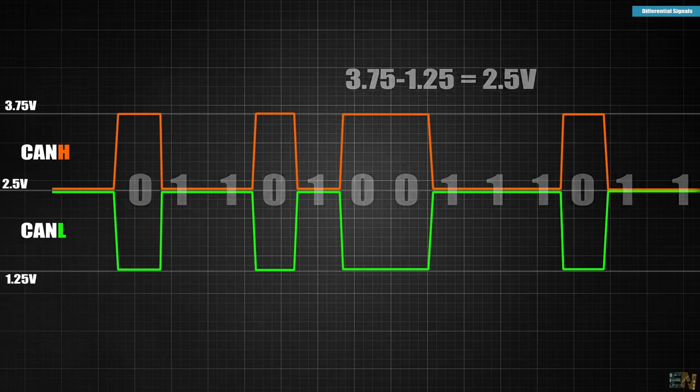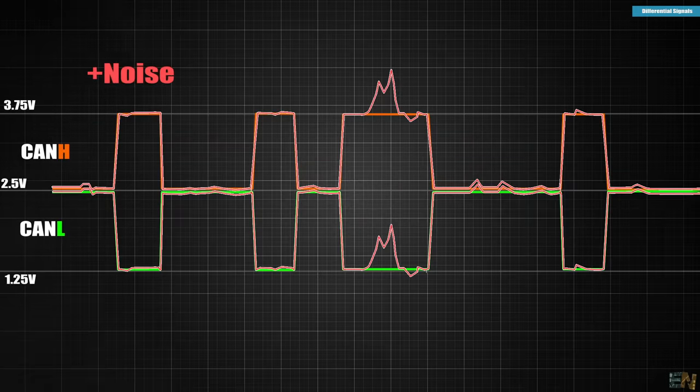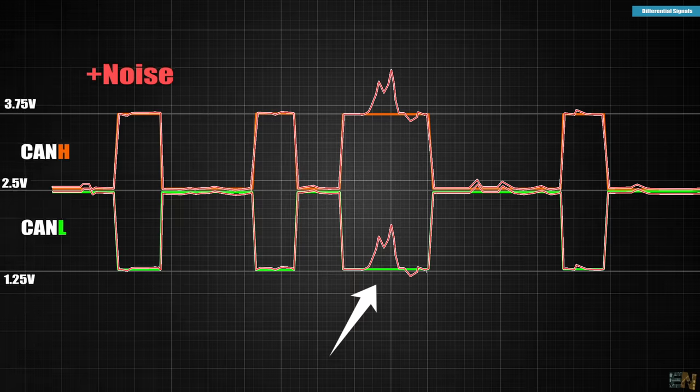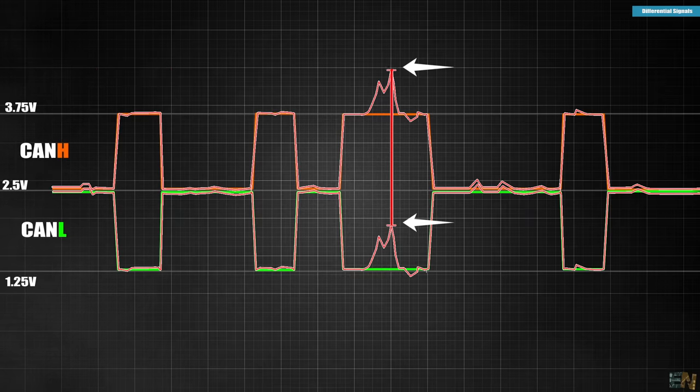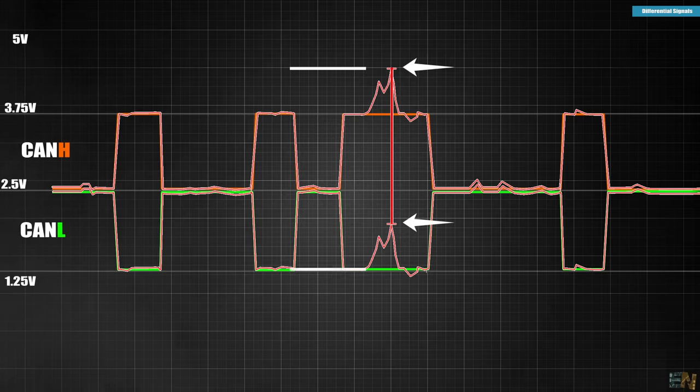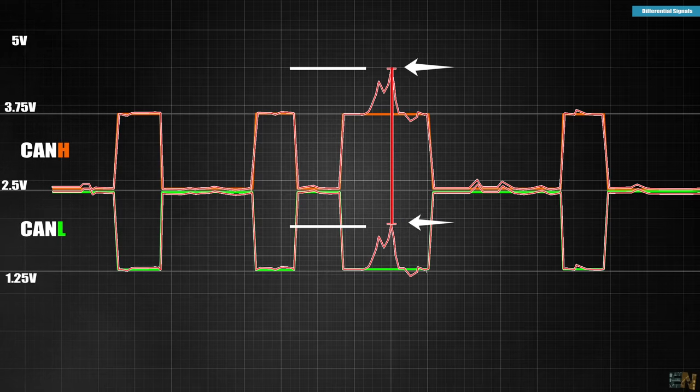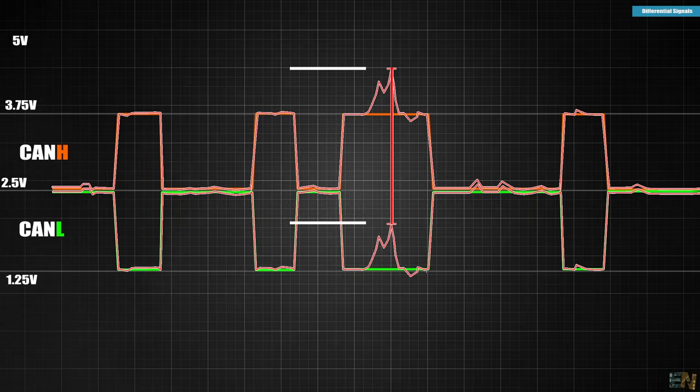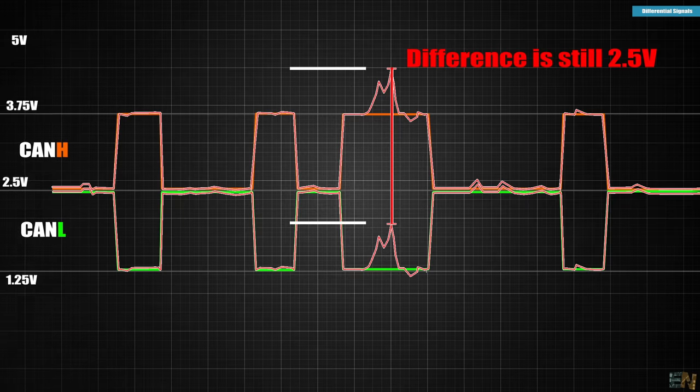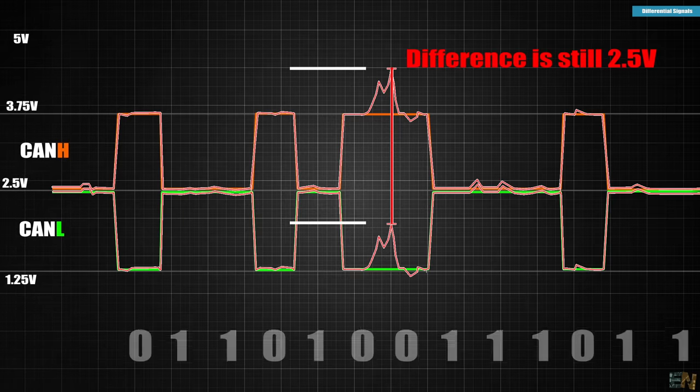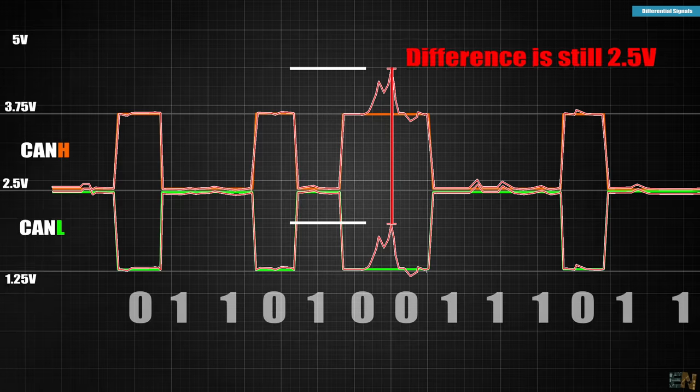But now look what happens when we introduce the same magnetic noise as before. Let's say that this bit here is affected by the same noise level. But guess what? Because both wires were next to each other, both levels would be affected with the same amount. So let's say that the H goes from 3.75V to 5V and L goes from 1.25V to a voltage of 2.5V. So the differential value between the signals is still 2.5V and we still interpret that as a 0 bit. So the data was not affected by the external noise.